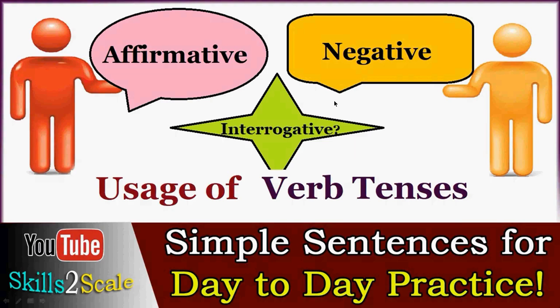Hello everybody. Let's discuss today about the usage of verb tenses. In our previous video, we have seen some simple present, simple past and simple future tenses with some examples. So today we will see some more examples of these verb tenses in three categories: affirmative, negative and interrogative. All these sentences are formed so that they are simple and can be used in day-to-day use.